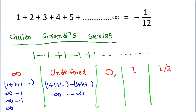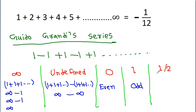The reason behind 0 is if we consider an even number of terms, then the answer will be 0. The reason behind 1 is if we consider an odd number of terms, then it will be 1. And some students also said the answer is 1 by 2, which Ramanujan also agreed with.